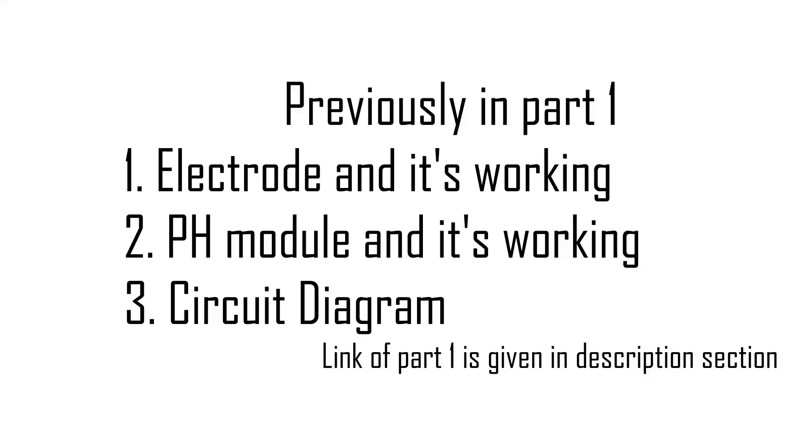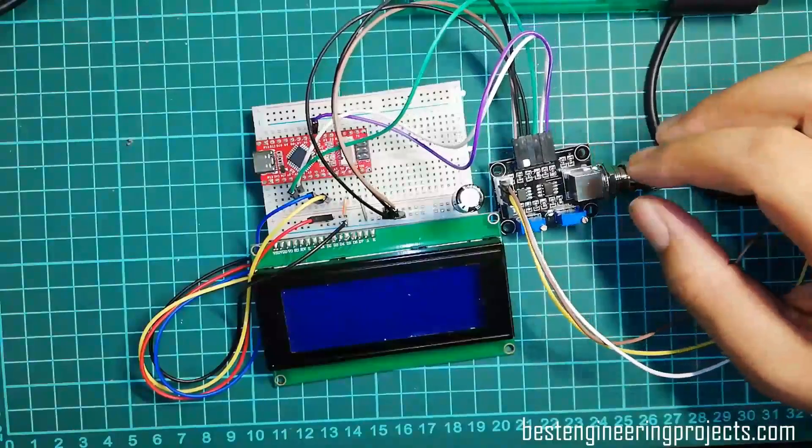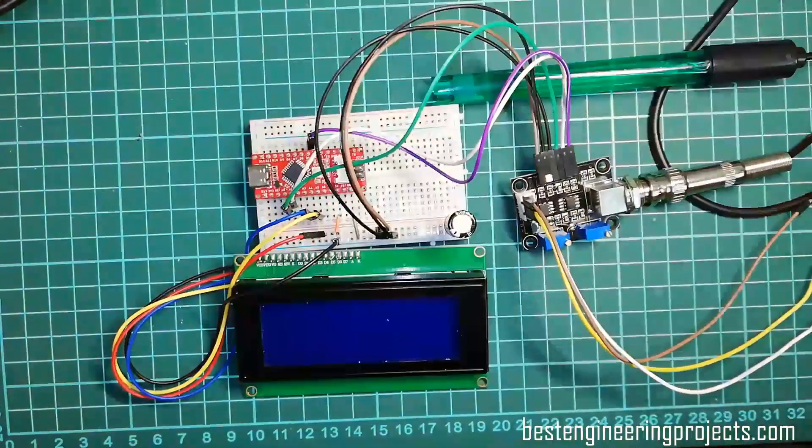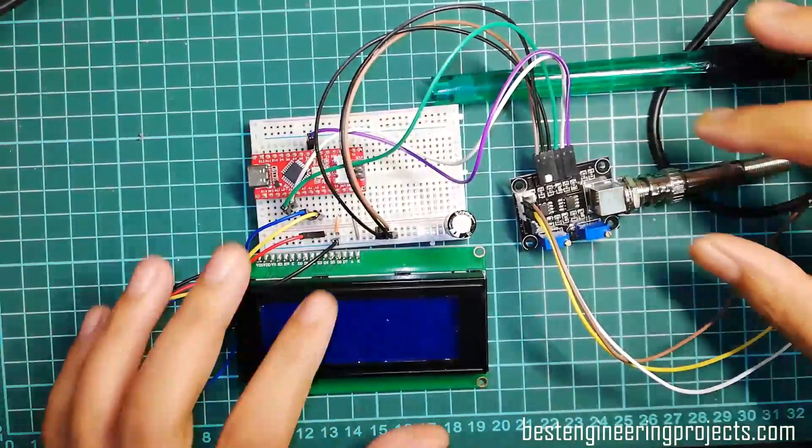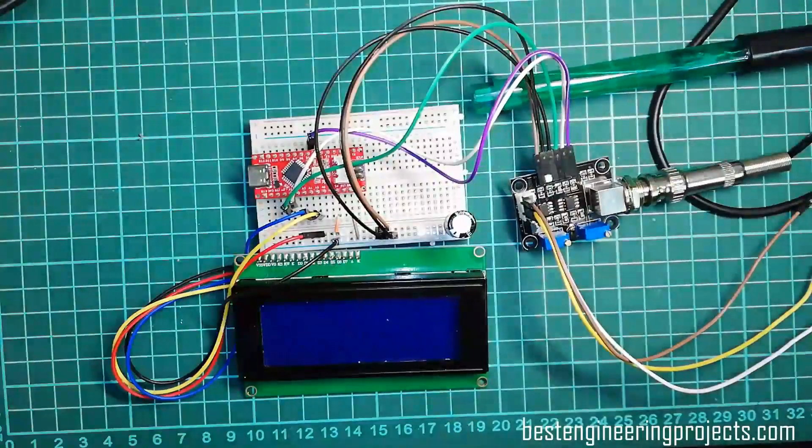Now let's start with calibration of the pH module. Step 1: Connect all the components as shown in circuit diagram. As we had already done the entire connection, we can jump to step 2.